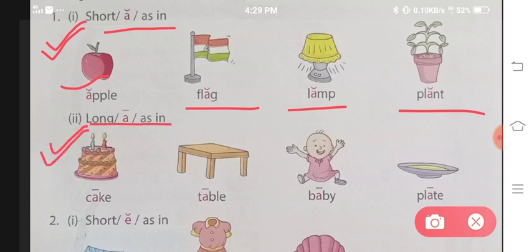Now let's compare this with part two, that is long A. Now here the A sound will be long, like cake. In cake, the A pronunciation, the A sound, is made long. Cake. Number two, table. Table. Number three, baby. Baby. You can see here the A sound is going very long. Then is plate. Plate. Here also the A sound is going very long. This means this vowel A can have two sounds. One is short and the other is long.